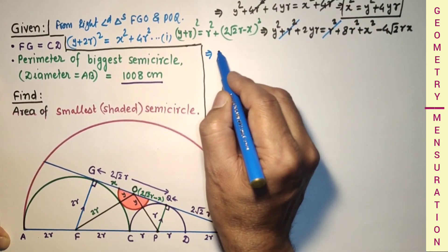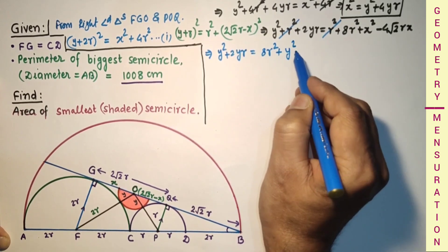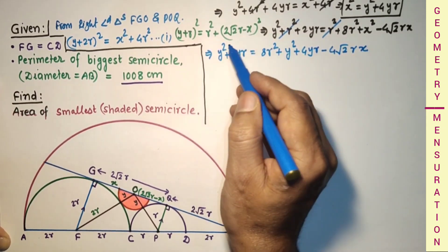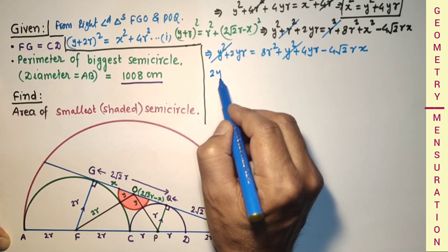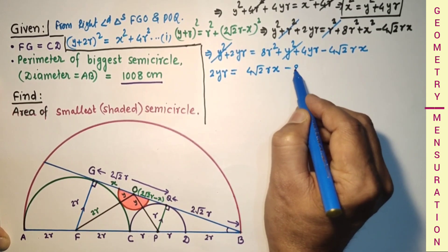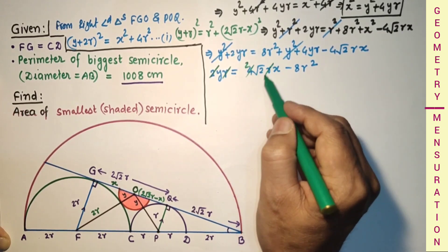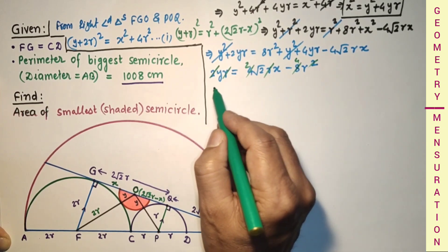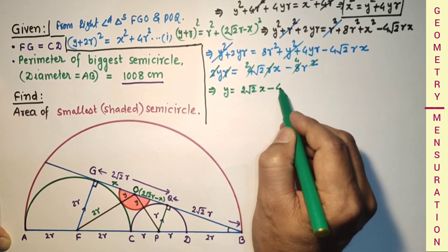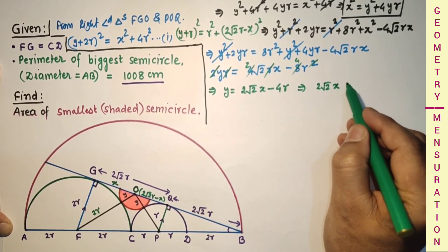Since r is not zero, we can divide through by 2r. This gives: y = 2√2·x − 4r. Rearranging: 2√2·x = y + 4r.